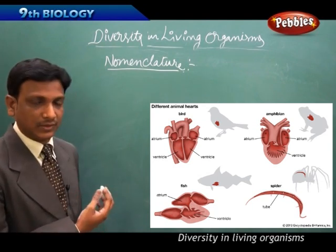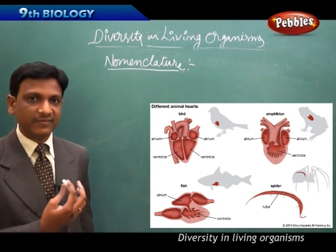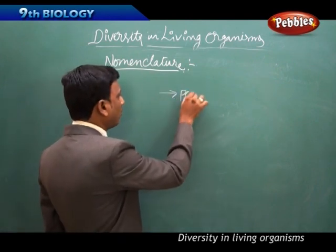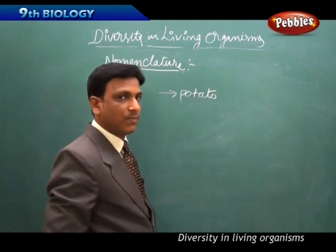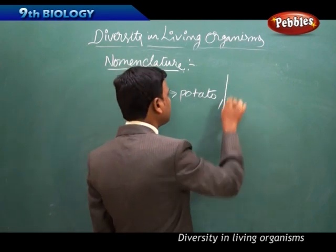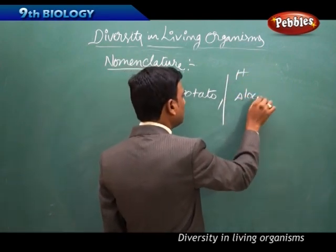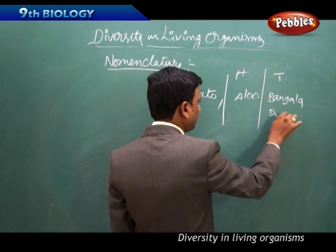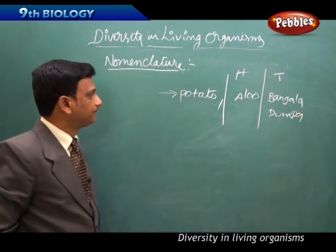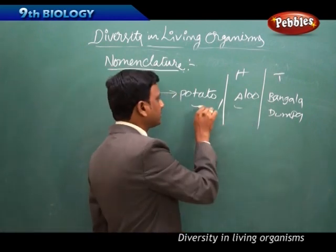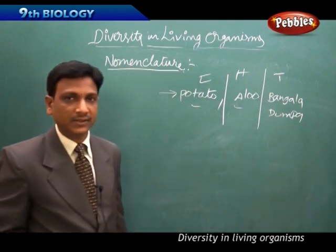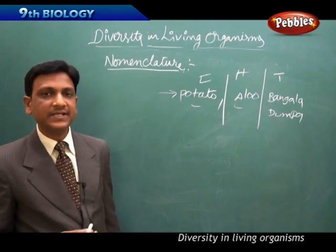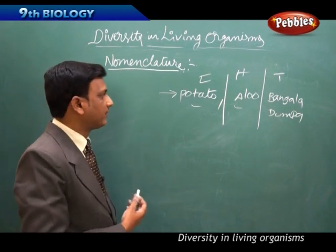Using local names leads to confusion. For example, the potato plant is called 'potato' in English, 'alu' in Hindi, and 'bangala dumpha' in Telugu. The same plant has different names in different languages — this causes confusion and is not the correct way to name plants and animals.